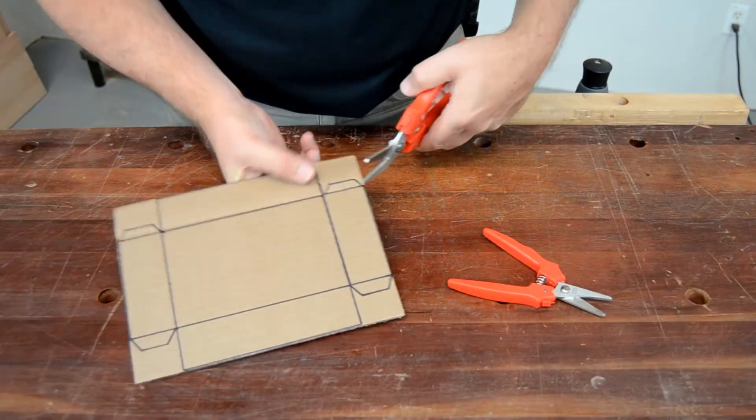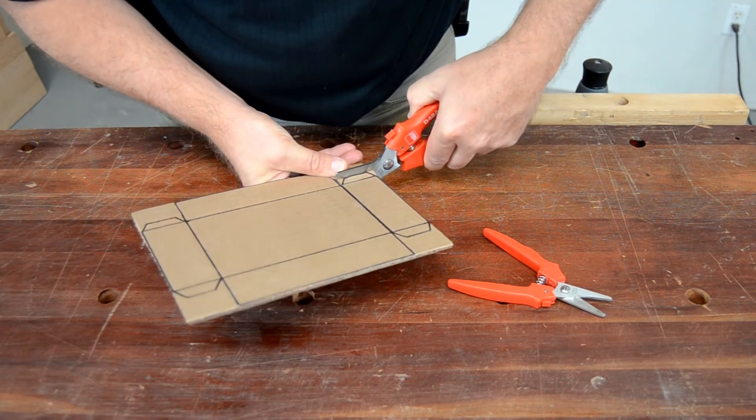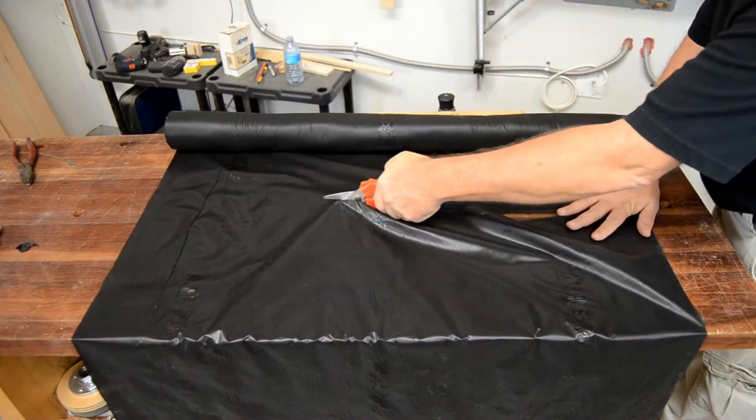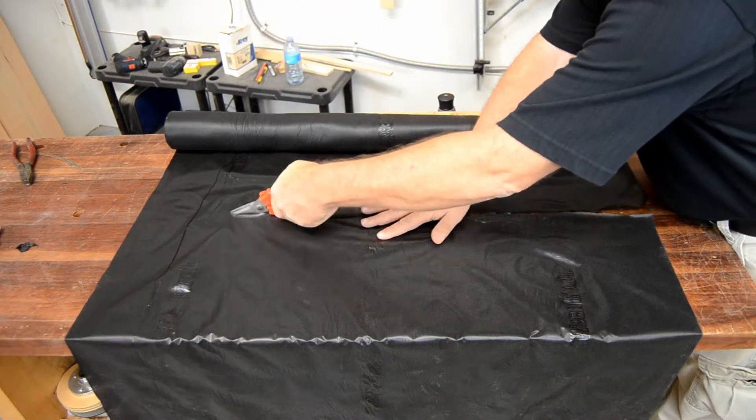The strong, lightly serrated blades cut cardboard and heavy paper products with ease, while still maintaining the tolerance necessary to cleanly cut this woven plastic cloth.